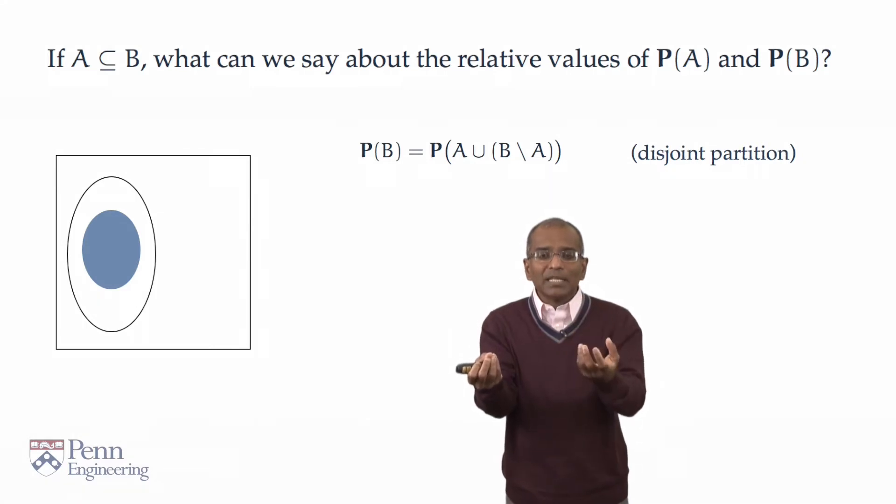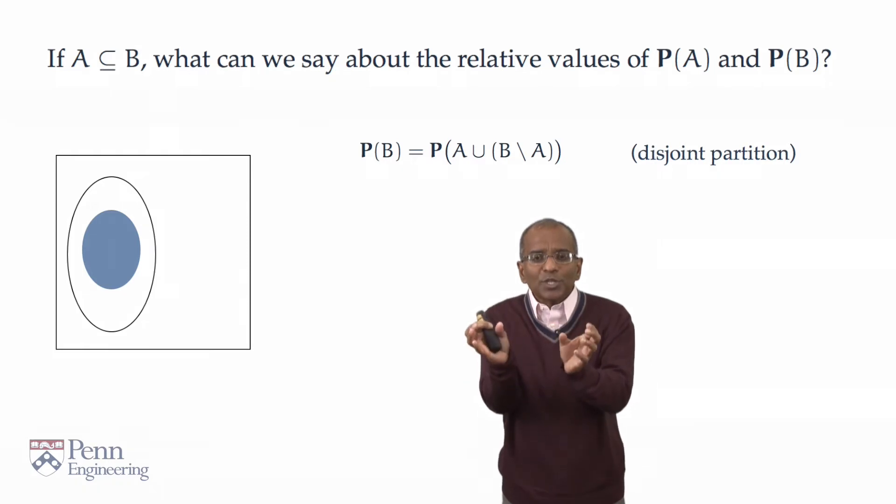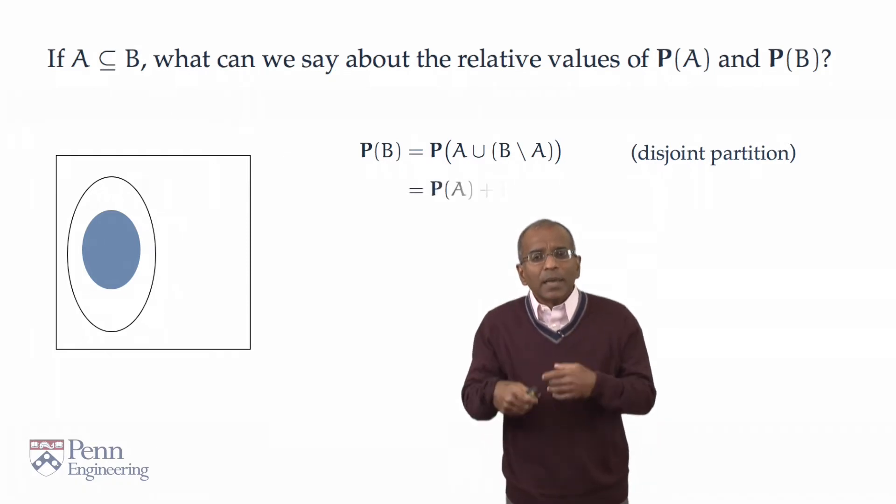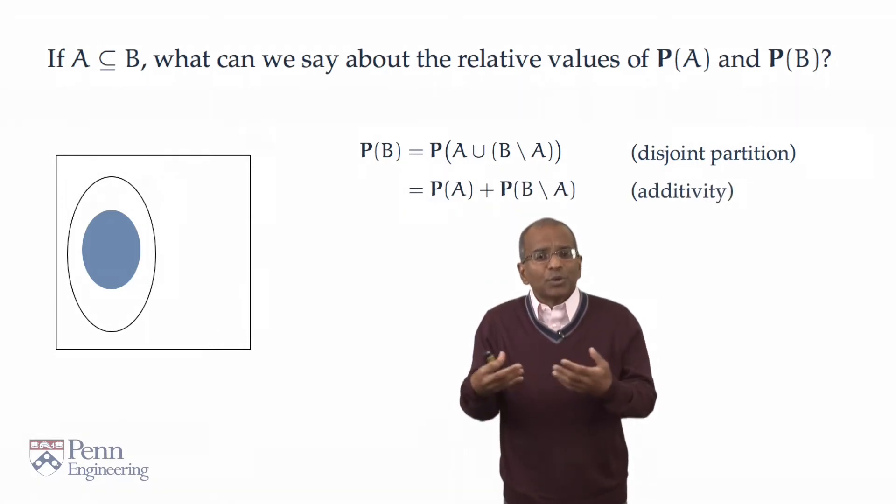Manifestly, anything in B minus A cannot be in A. You have explicitly excluded all the elements of A in B minus A. But now B has been decomposed into a union of two disjoint pieces, and additivity immediately tells us that this probability must be the sum of the constituent probabilities.